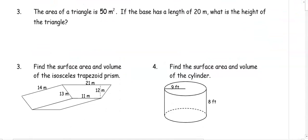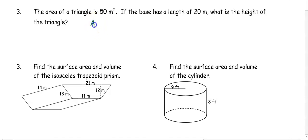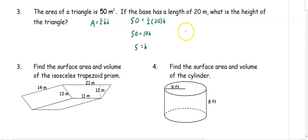In number three, the area of a triangle is 50 meters squared. If the base has a length of 20 meters, what is the height of the triangle? To get the area of the triangle, it is one half base times height. So we have 50 equals one half times 20 times the height. Half of 20 is 10, so 50 equals 10h. So when we divide, we get five. So our height is five meters.